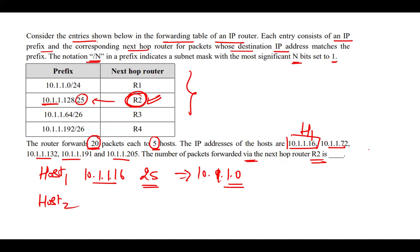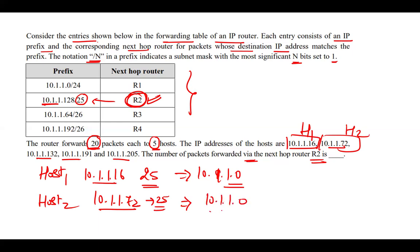Now for host 2, the IP address is 10.1.1.72. If we mask this IP address with a 25-bit net mask, we again get 10.1.1.0. So host 2 is also not going to forward its packet via router R2, because after net masking with 25 bits, the result does not match.